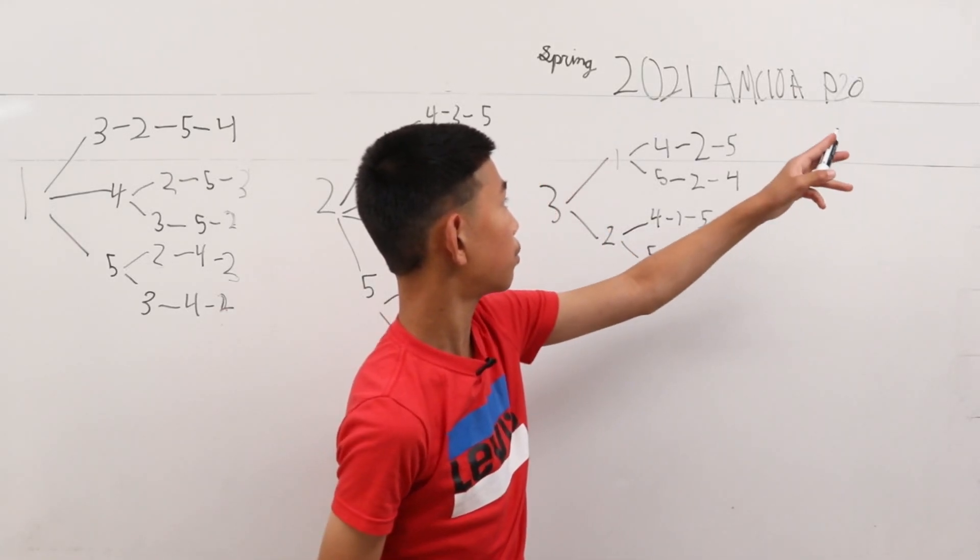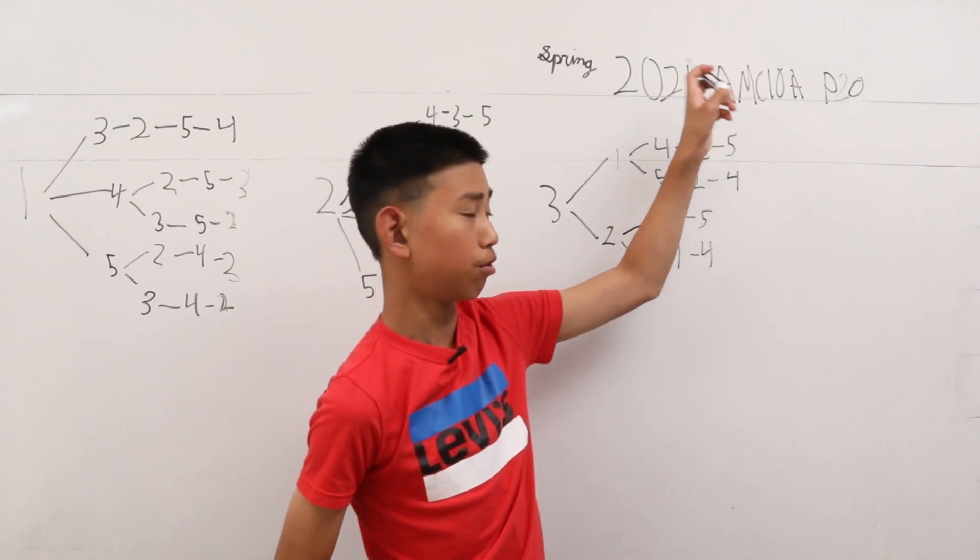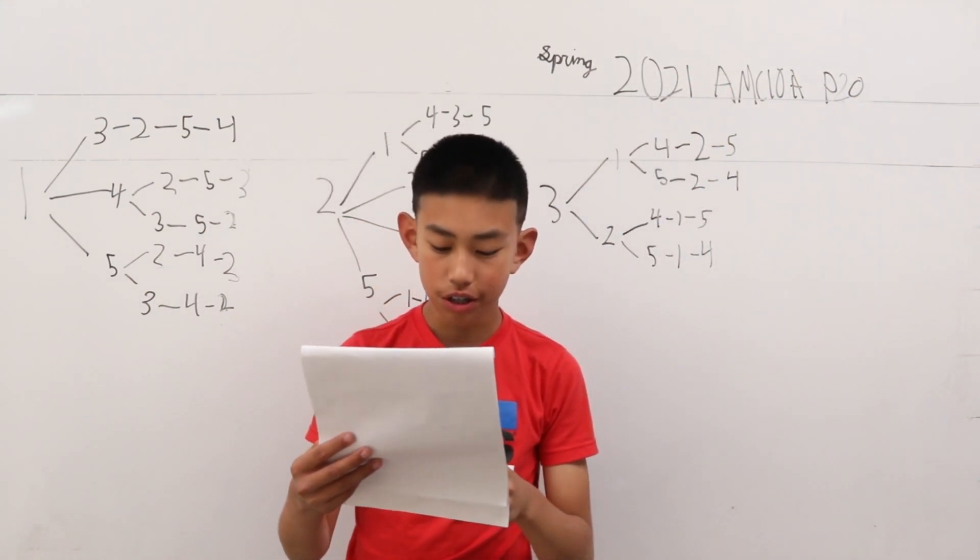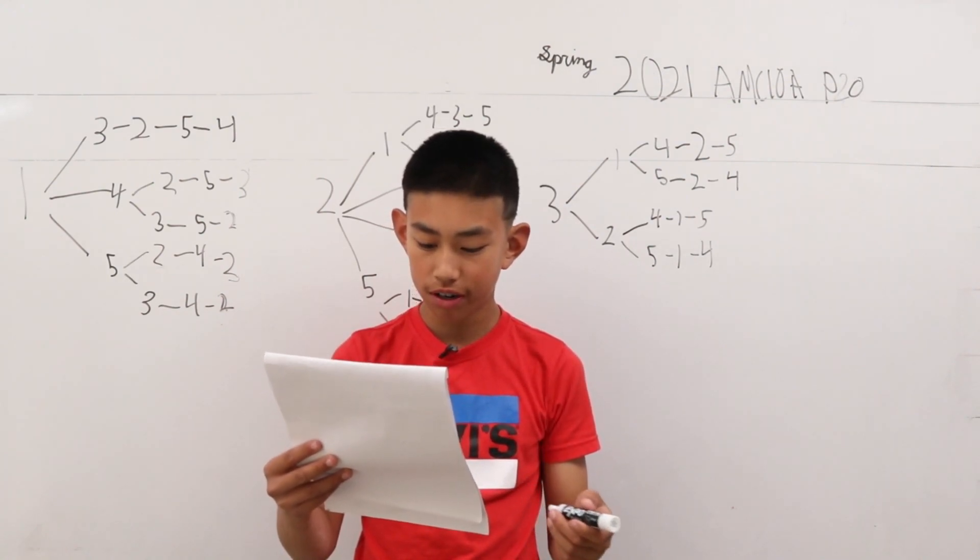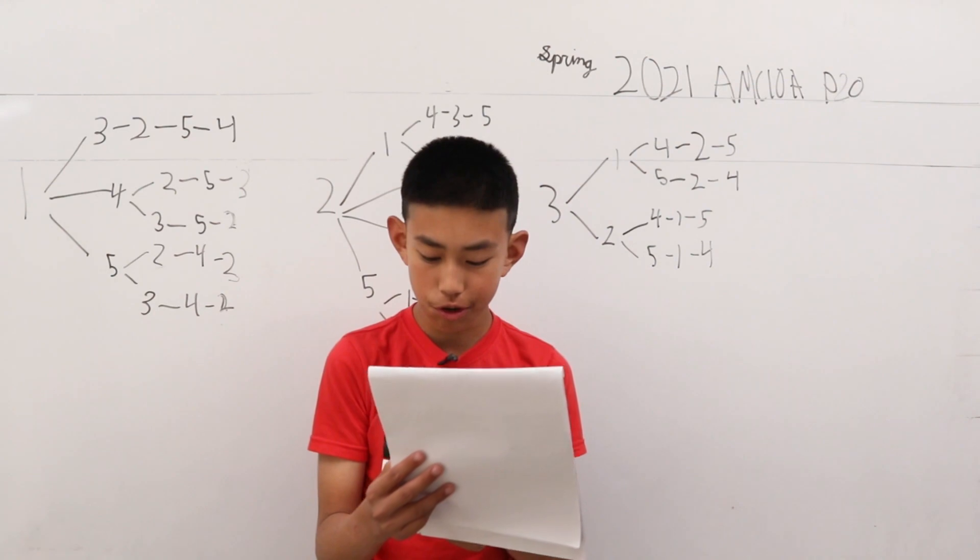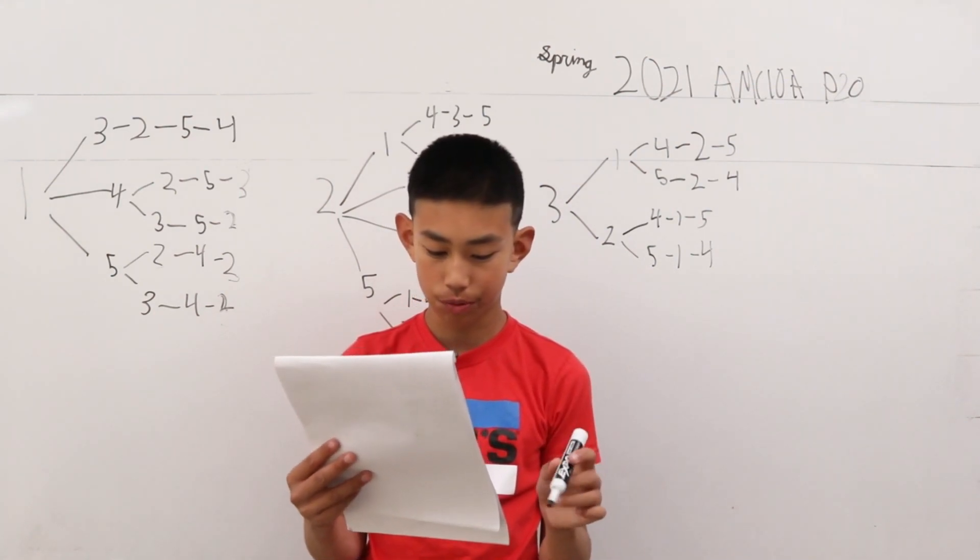Today we're solving problem 20 from the spring AMC 10A from 2021. In how many ways can the sequence 1, 2, 3, 4, and 5 be rearranged so that no three consecutive terms are increasing and no three consecutive terms are decreasing?